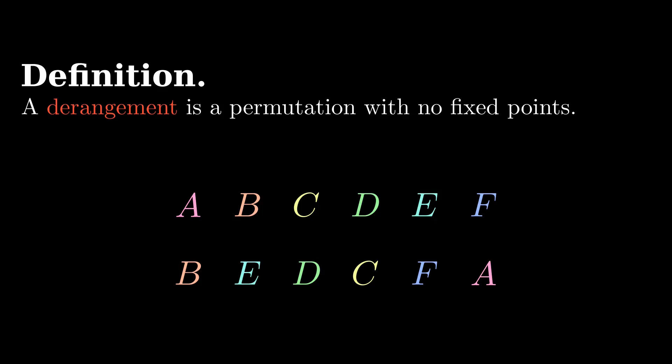If we use it as a verb and say derange n objects, we mean to permute them so none are back where they started.